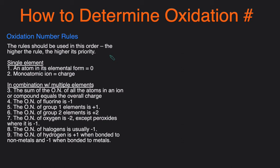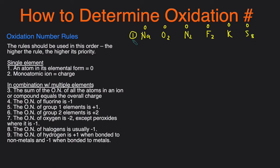Here are some examples. Na in its elemental form has an oxidation number of zero. O₂ is also zero because oxygen is diatomic — that's its natural elemental form. N₂ is also zero, F₂ is zero, K is zero, and S₈ is also zero. All of these are elements in their natural elemental form, so they all have an oxidation number of zero.